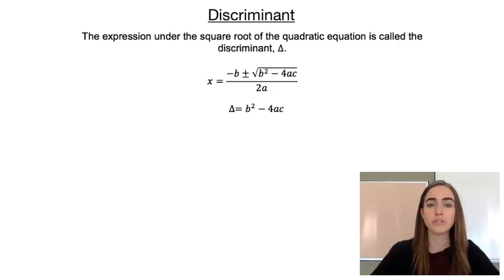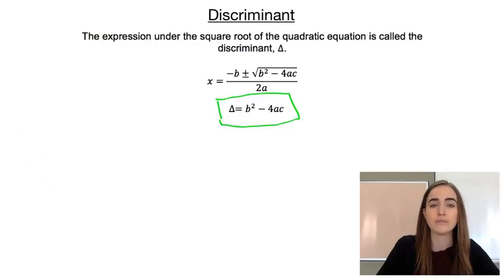In this video, I want to have a look at something called the discriminant. The expression under the square root sign in the quadratic formula is called the discriminant, and the symbol used for it is this little triangle called delta. So this here is our quadratic formula. Under our square root sign, it says b² minus 4ac. So b² minus 4ac, that is the discriminant.